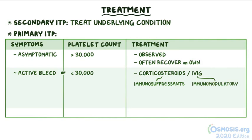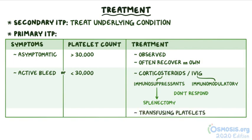Corticosteroids act as immunosuppressants and IVIG has an immunomodulatory effect; both help stop the formation of new autoantibodies. In individuals who don't respond to steroids, a splenectomy can be done to get rid of the splenic macrophages that are destroying the platelets. Finally, transfusing platelets can be done when the platelet count is less than 10,000.